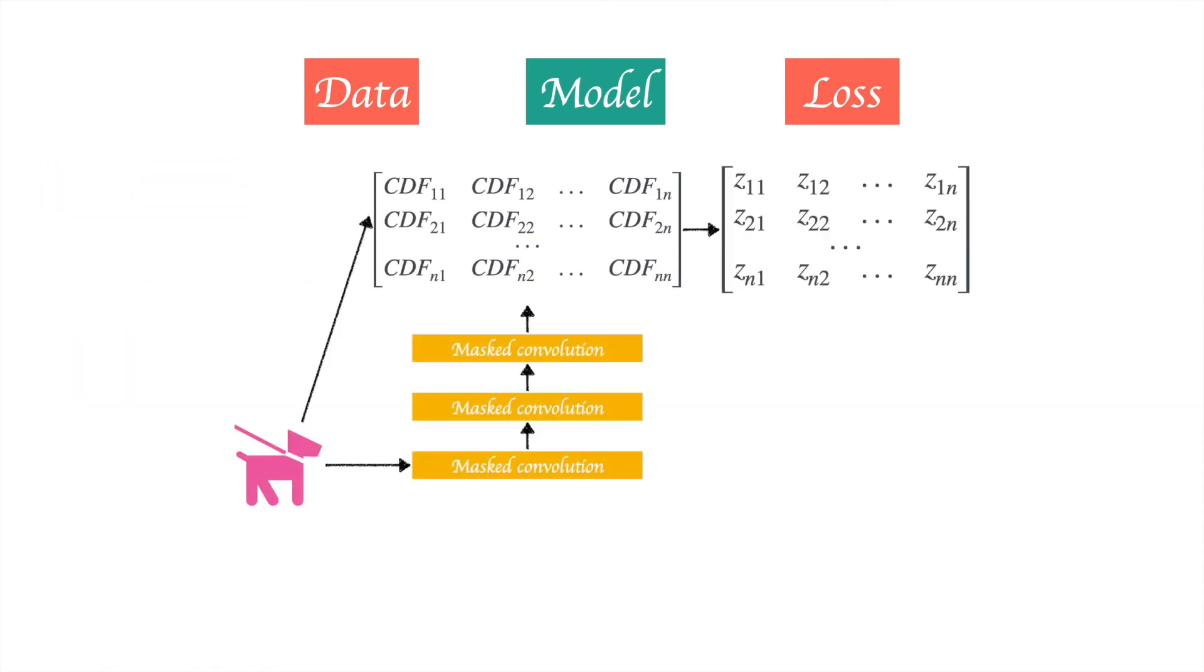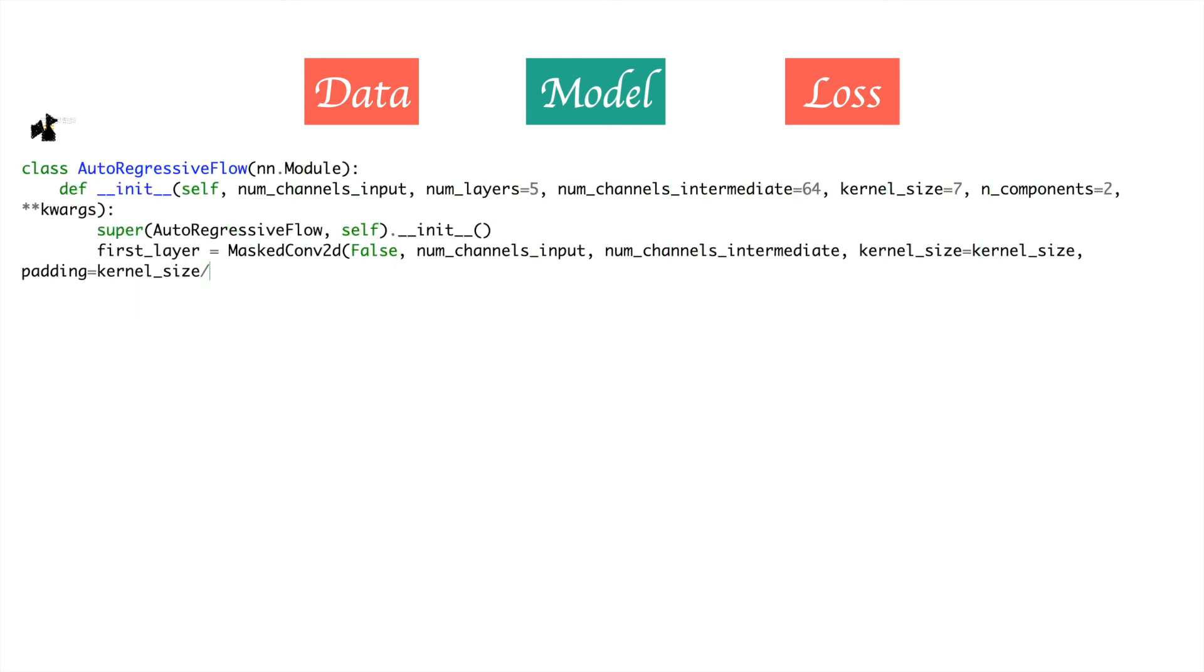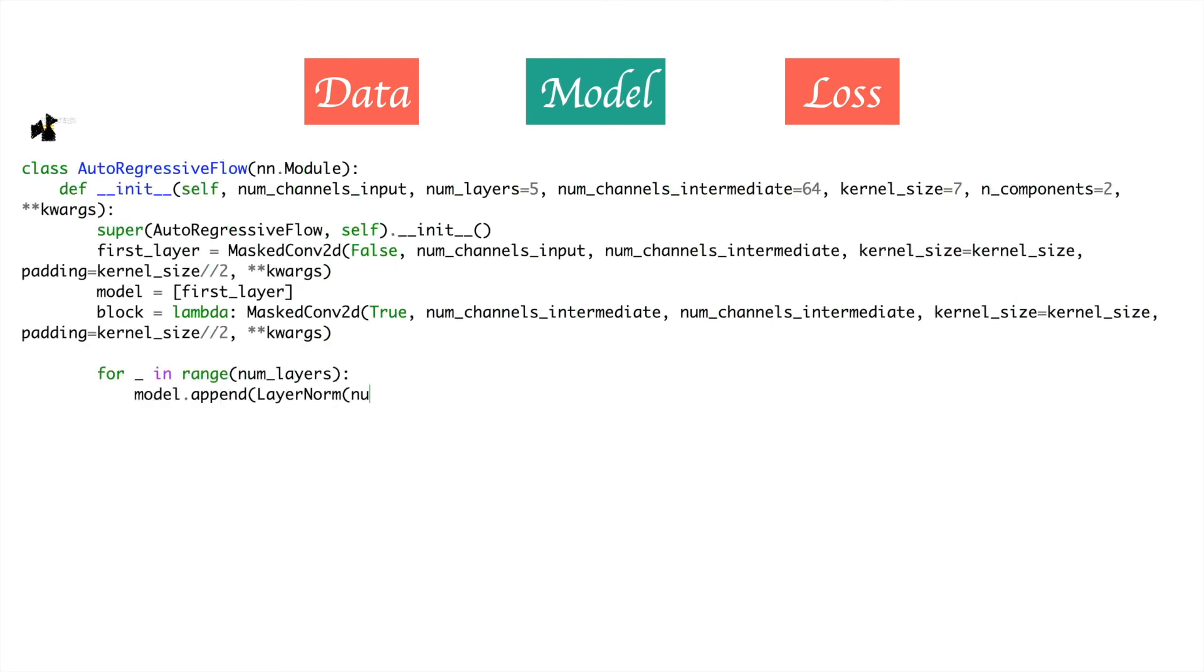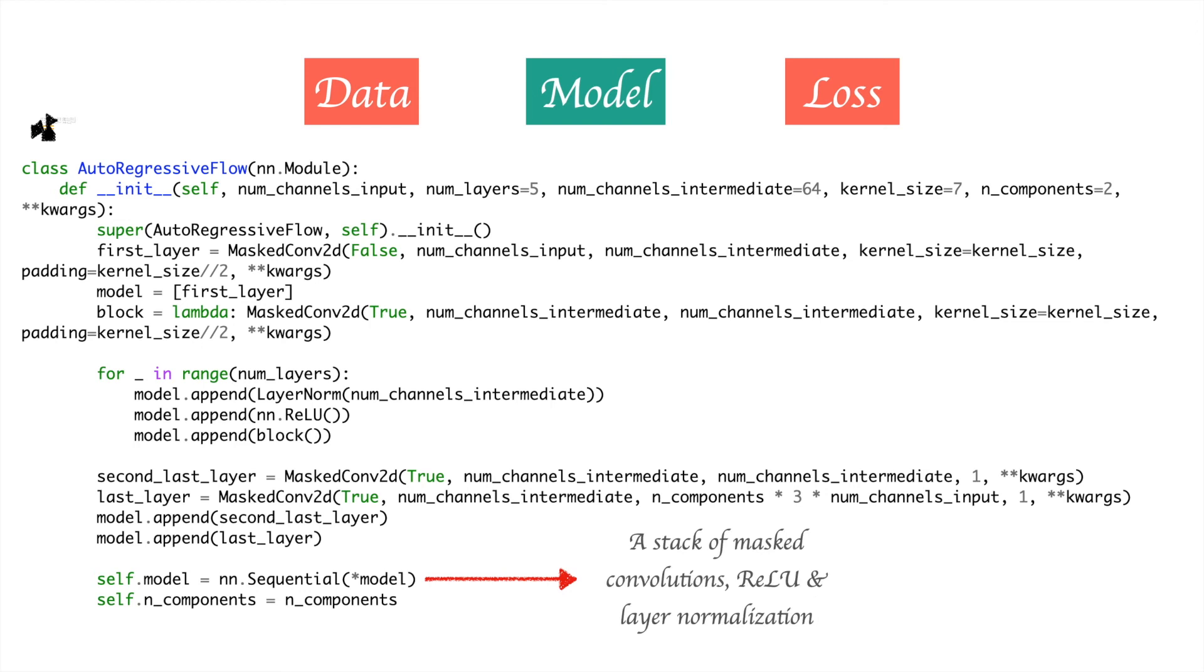Now we would like to define a class of stacked convolutions where all of these masked convolution layers are stored. For that, we define a class named autoregressive flow. It looks complicated but all it's doing is creating a stack of masked convolutions, some nonlinear activation layers, in this case ReLU, and layer normalization.